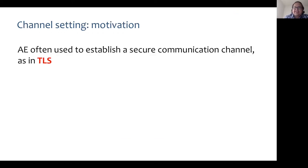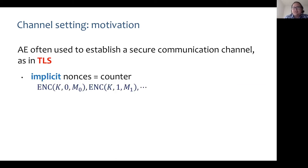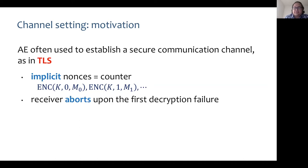The channel setting is motivated by the typical use of authenticated encryption as a means to establish a secure communication channel, as in TLS. In particular, only certain restricted adversarial interactions can occur. For example, nonces are implicit — they are used as a counter. The receiver aborts upon the first decryption failure, and one goal is to ensure in-order delivery of messages.